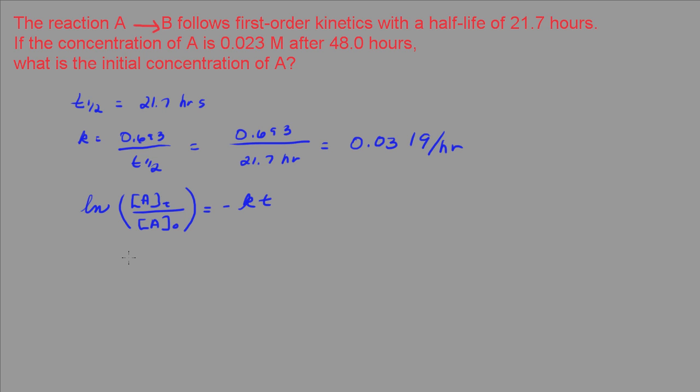What I think I will do is I'll just go ahead and plug in some of these values. We're told that the concentration of A after 48 hours is 0.023 molar, so I'm going to plug that in as 0.023 molar. What we're looking for is the initial concentration of A. That's equal to a negative K, 0.0319 per hour times the 48 hours.